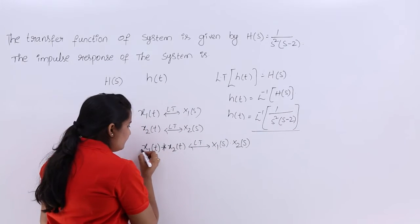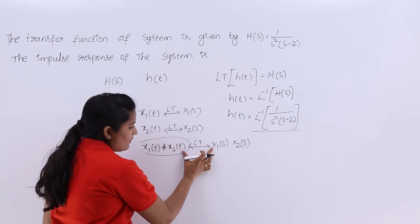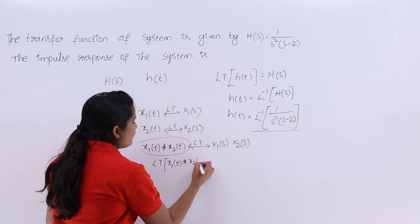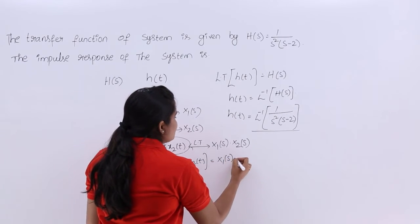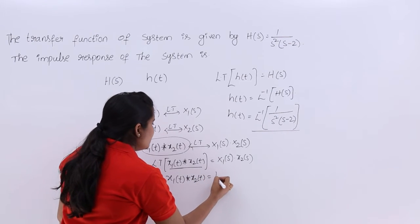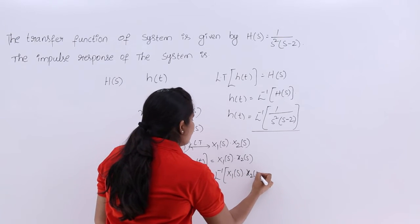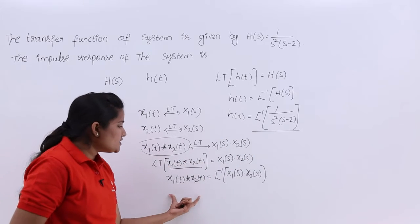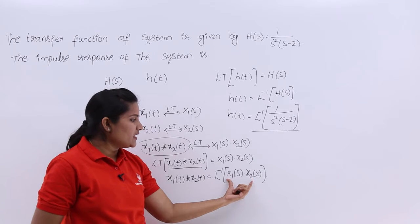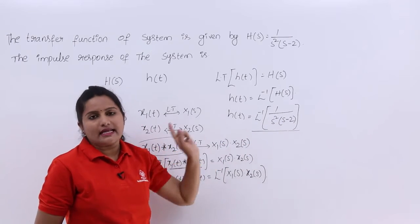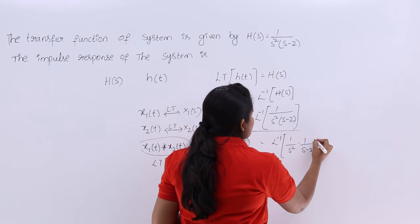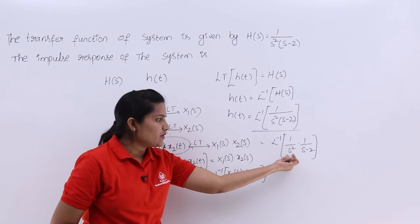If we want x₁(t) convolved with x₂(t), we expand: the Laplace transform of x₁(t) * x₂(t) equals x₁(s) · x₂(s). So the time domain signal x₁(t) * x₂(t) is the inverse Laplace transform of x₁(s) · x₂(s). Comparing these two equations, we consider h(t) as the time domain equivalent and h(s) as the multiplication of two transforms: the inverse transform of 1/s² multiplied by 1/(s - 2). I am considering 1/s² as x₁(s) and 1/(s - 2) as x₂(s).